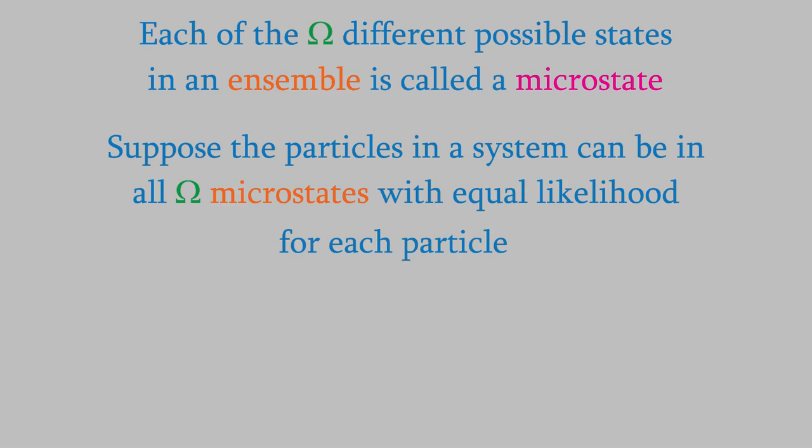Suppose that each particle is equally likely to be in any of the omega different microstates. In that case, the entropy for each particle would be equal to kB times the logarithm of omega. To get the total entropy,